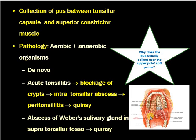An important question is: why does the pus collect usually near the upper pole or soft palate? One reason is that Weber's salivary glands are present in the supra-tonsillar fossa and are a major cause of peritonsillar abscess formation. Additionally, the upper part of the peritonsillar space is more loose and areolar compared to the lower part, which is more fibrotic. Therefore, the pus collects in the supra-tonsillar area of the peritonsillar space.